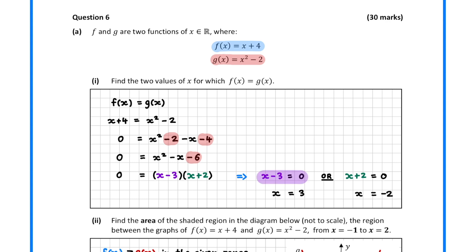So either x minus 3 is zero or x plus 2 is zero. This gives us two solutions: x equals 3 and x equals minus 2.